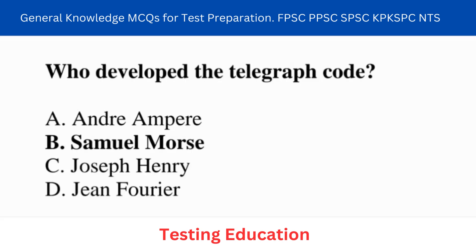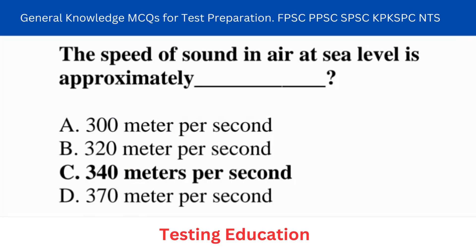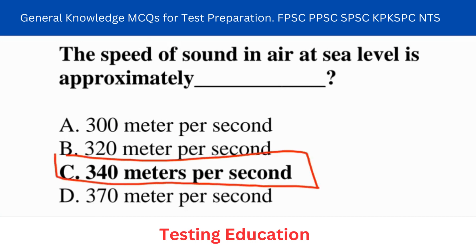Next question: who developed the telegraph? Answer: Samuel Morse. Next question: the speed of sound in air at sea level is approximately 340 meters per second.